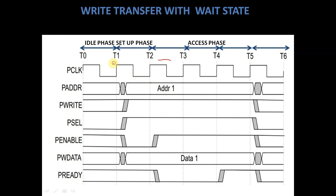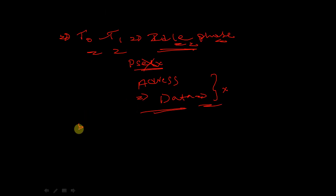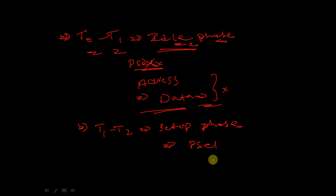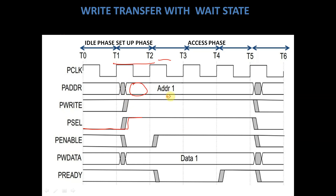During the phase T1 to T2, it is called a setup phase, since Pselect has been asserted to 1. During the setup phase, we are getting some definite address. Pwrite is also asserted to 1, since it is a write transfer. Pselect is asserted to 1 and PEnable is still 0, which indicates no transfer. PWData is also here on this data bus.